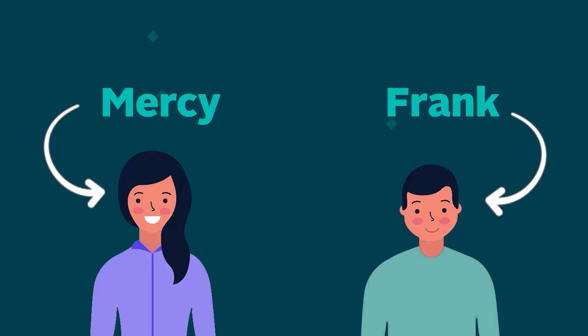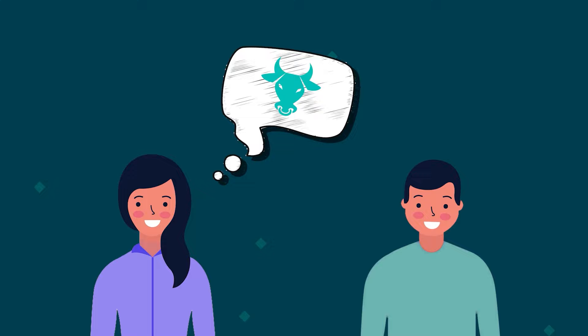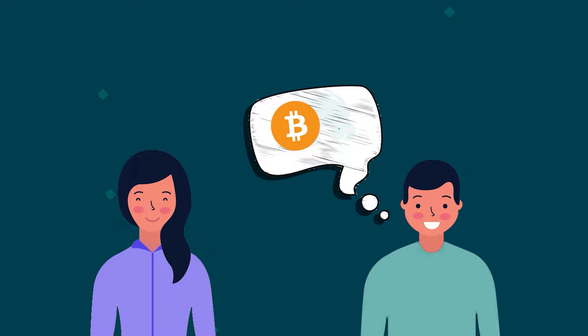Let's find out how crypto futures work through a practical example. We have two crypto derivative traders, Mercy and Frank, who enter into a futures contract when the price of Bitcoin is $30,000. Mercy is bullish on Bitcoin and confident it will surpass $30,000 in a month, which is the expiration date. This means she will pay $30,000 for one Bitcoin regardless of Bitcoin's price in a month. Frank, on the other hand, is bearish and believes the price will drop below $30,000, so the contract commits him to selling Bitcoin at the agreed price regardless of the asset's price in a month.